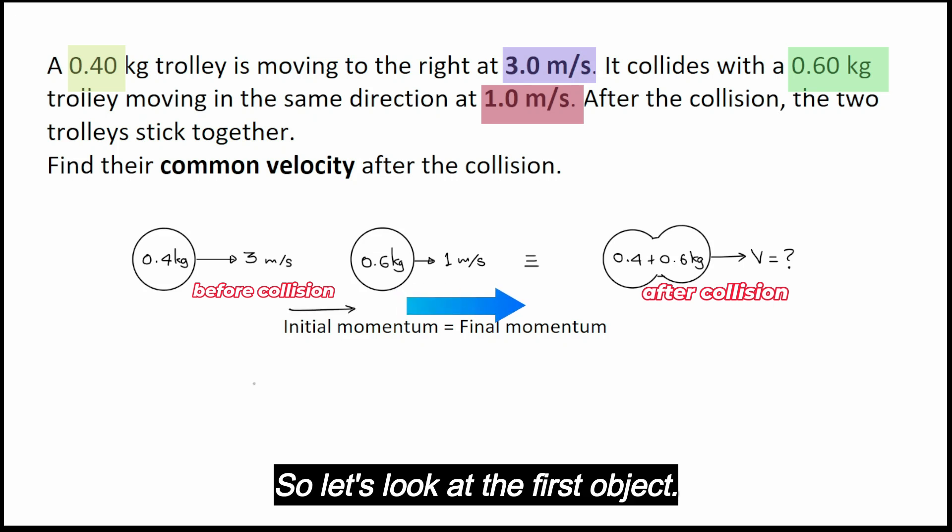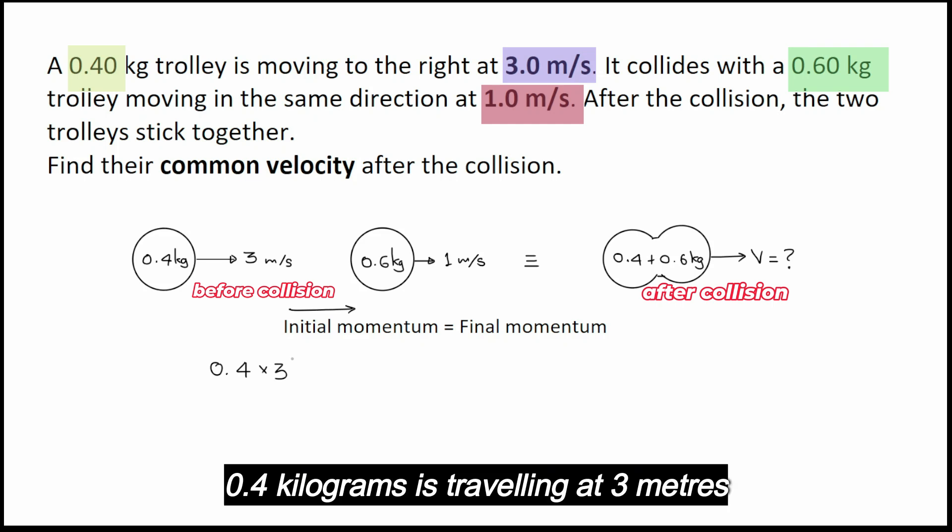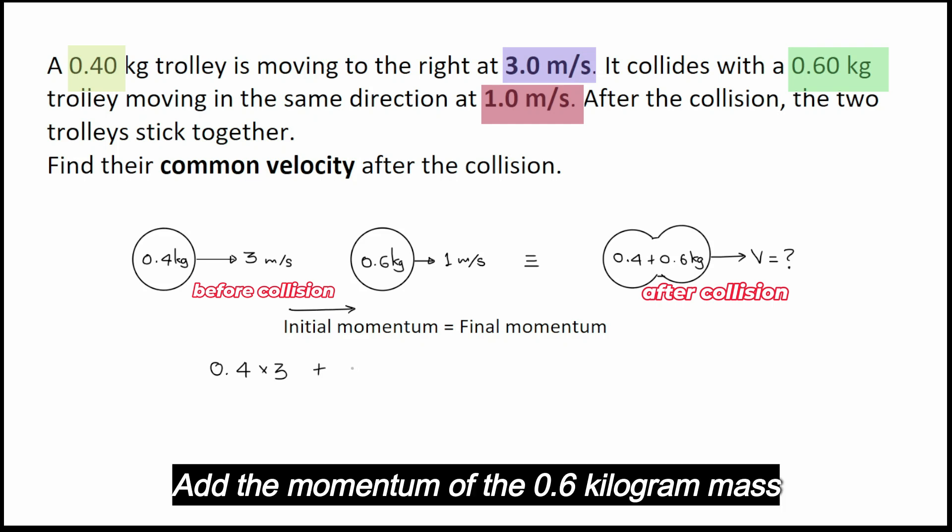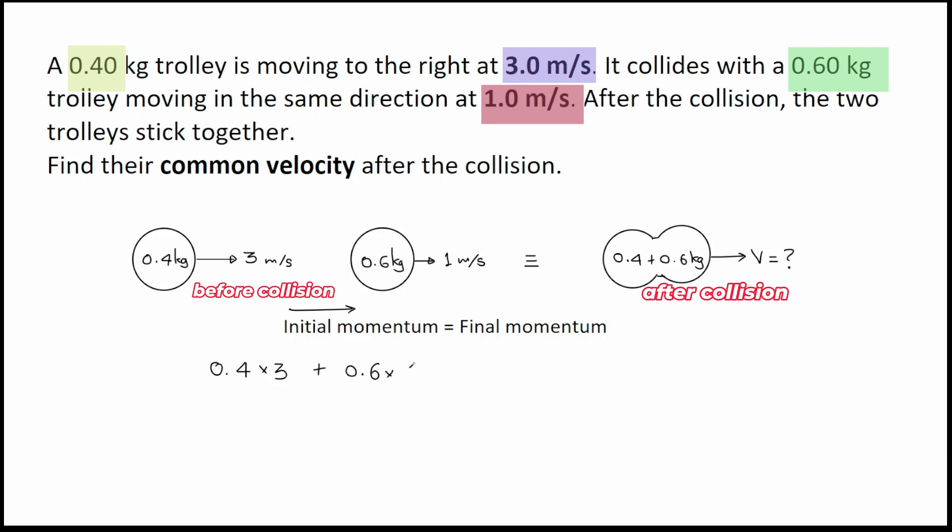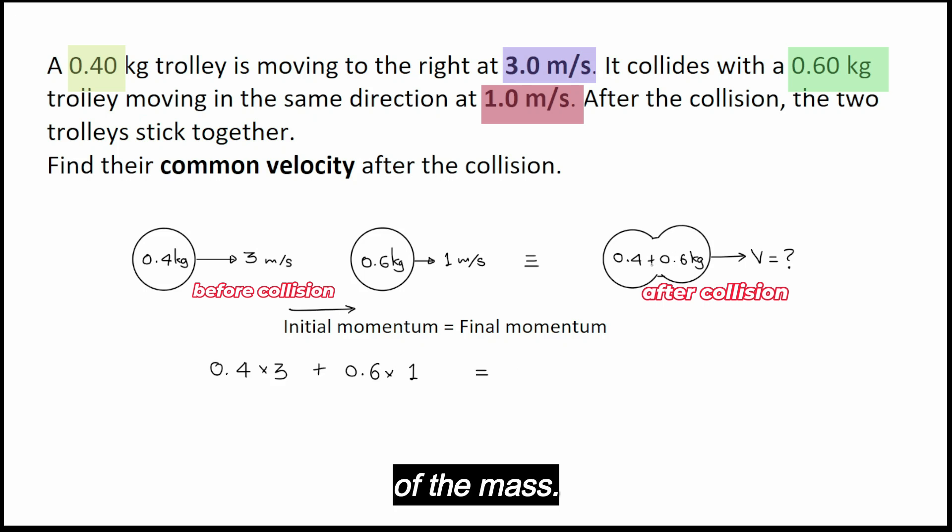So let's look at the first object. 0.4 kilograms is traveling at 3 meters per second. Add the momentum of the 0.6 kilogram mass, and that is equal to the combined momentum of the mass. So the combined mass is 1 kilogram multiplied by v, so here we get 1.8 as the answer for v.